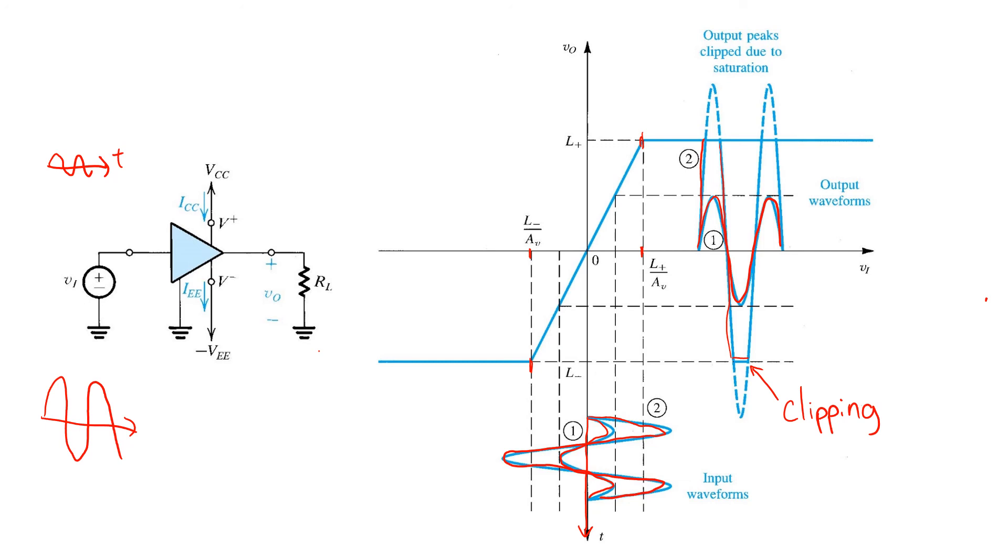Likewise, the negative saturation limit, L-, may be at negative VEE plus a small voltage, 0.3 volts. That's the most common situation. But special techniques can be used so that the amplifier saturates at, or even beyond, the DC supply voltages.